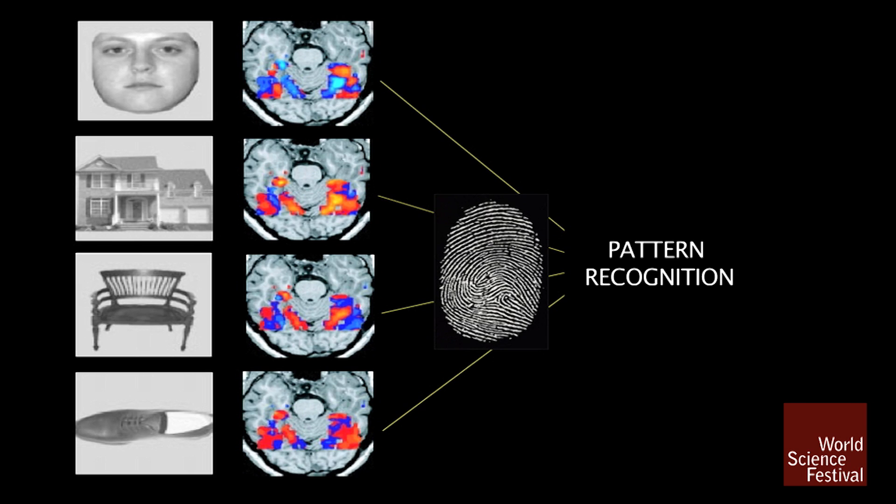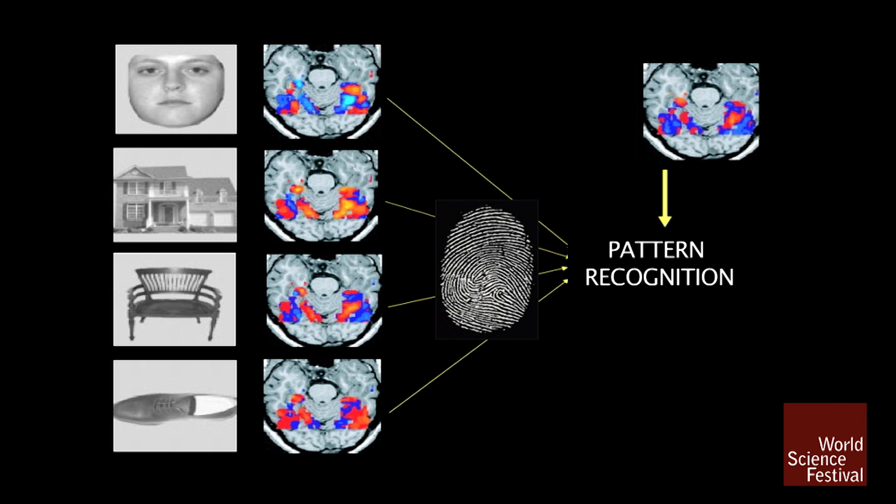It's very similar to using a fingerprint to recognize an individual. You have a large database of fingerprints with names associated with them. Similarly, we take the spatial patterns of brain activity and can identify specific thoughts that a person has, as long as those thoughts are in the database. When you then measure a pattern of brain activity and don't know what the person is thinking, the pattern classifier statistically guesses the most similar match using optimal techniques.